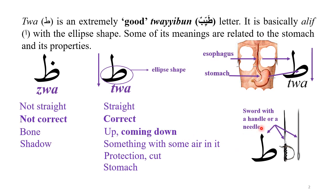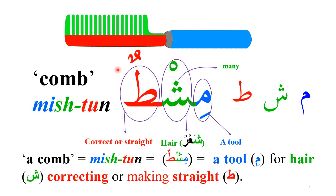You can see that Twa looks exactly like a sword with a handle, or a needle. One of its meanings is therefore protection — or to cut in the sense of protecting something. We already saw in my last video how Twa relates to straightness.